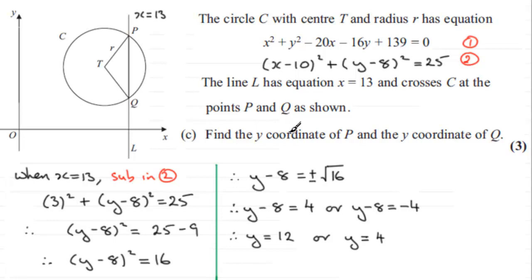Now we need to find the y coordinate of P and the y coordinate of Q. So the y coordinate of P has got to be greater than Q. So therefore, the y coordinate of P has got to be the 12.